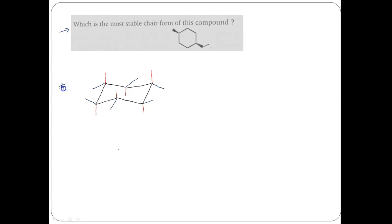Clearly, if we can draw the chair form of cyclohexane, this is the chair form. The bonds in red are the axial bonds and the bonds in blue are the equatorial bonds.